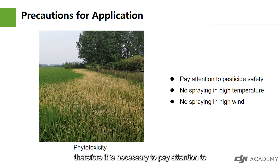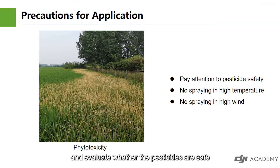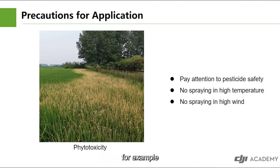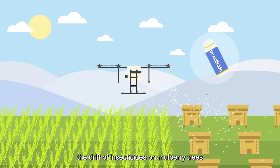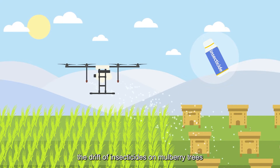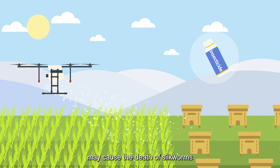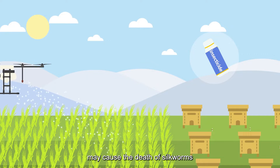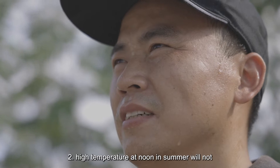Therefore, it is necessary to pay attention to the following. First, distinguish the safety of pesticides and evaluate whether they are safe for downwind crops in advance. For example, the drift of insecticides onto mulberry trees may cause the death of silkworms.